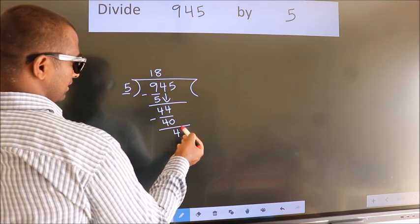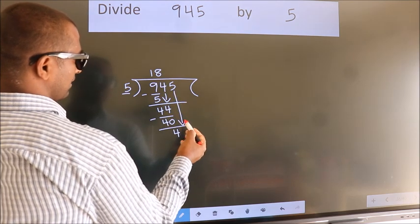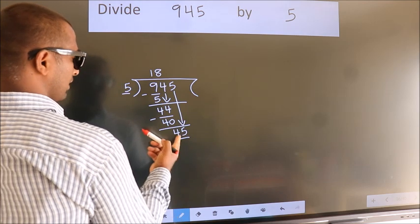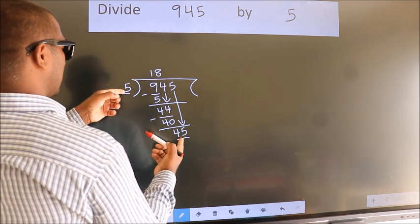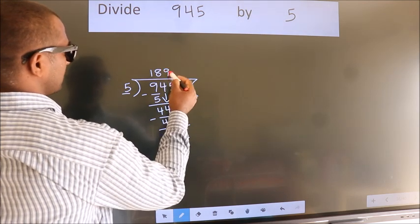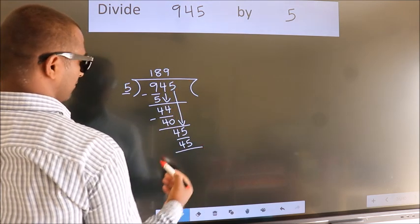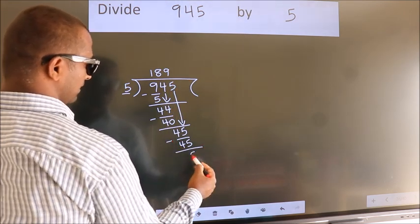After this, bring down the next number. So 5 down, so 45. When do we get 45 in the 5 table? 5 times 9 is 45. Now we subtract. We get 0.